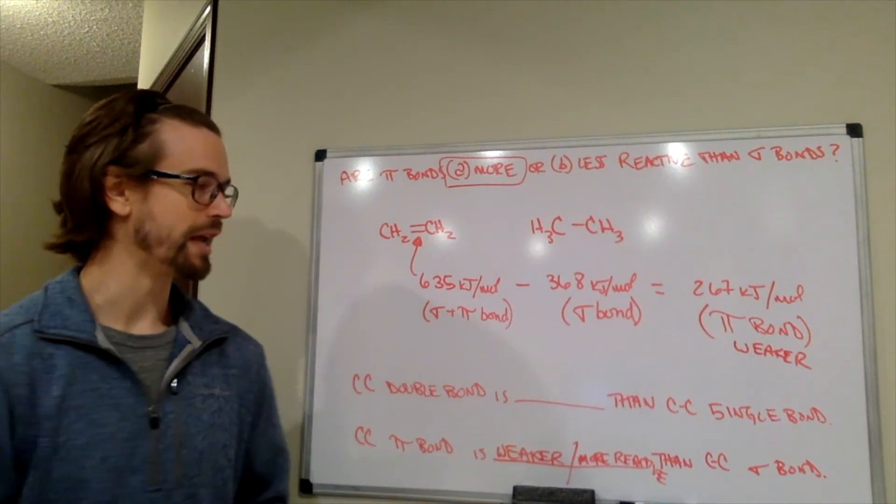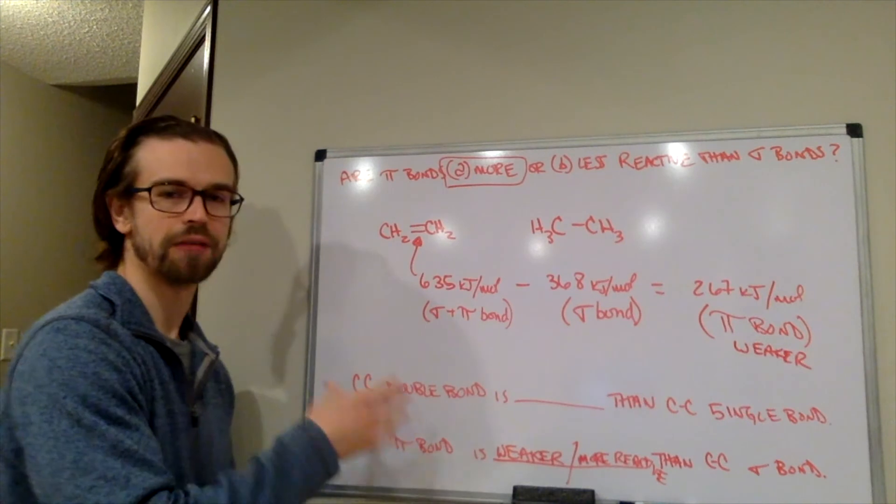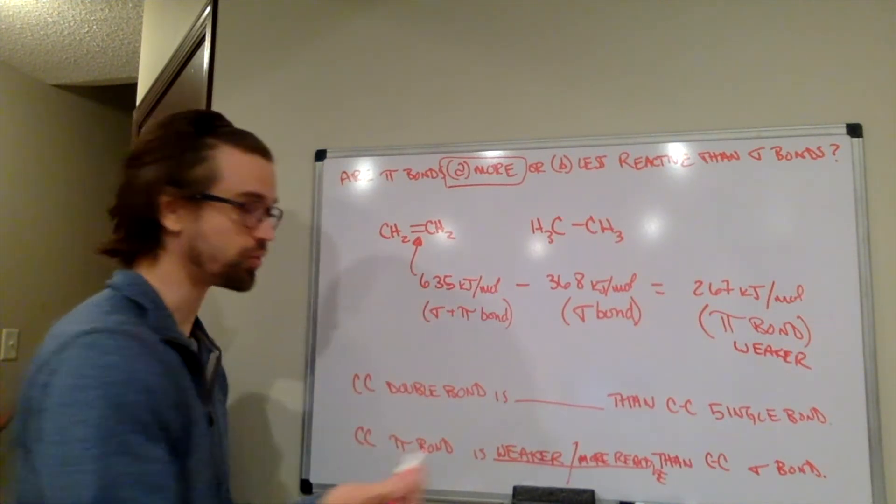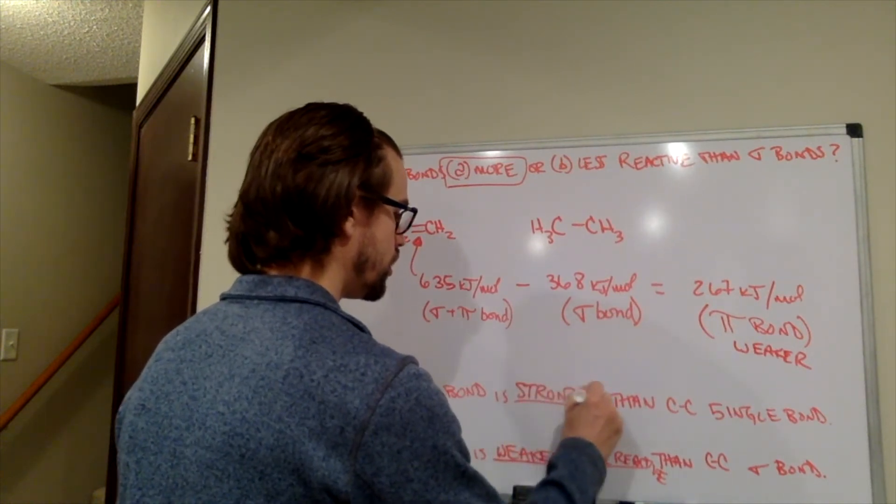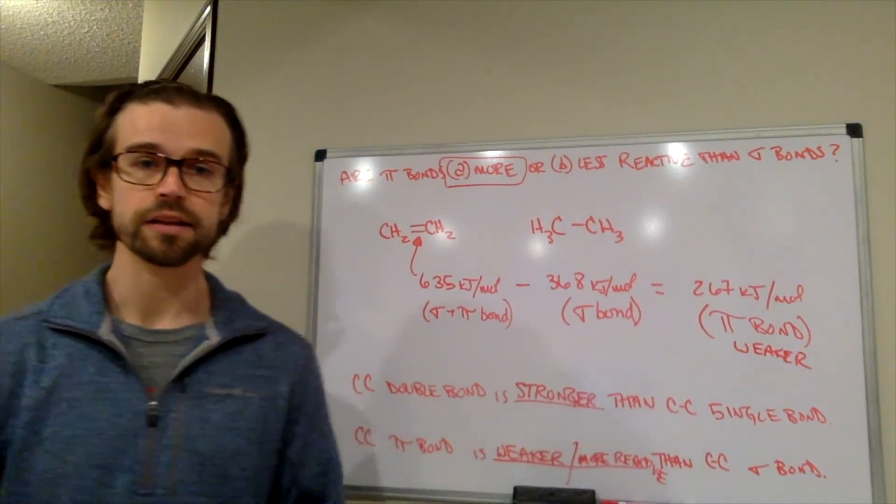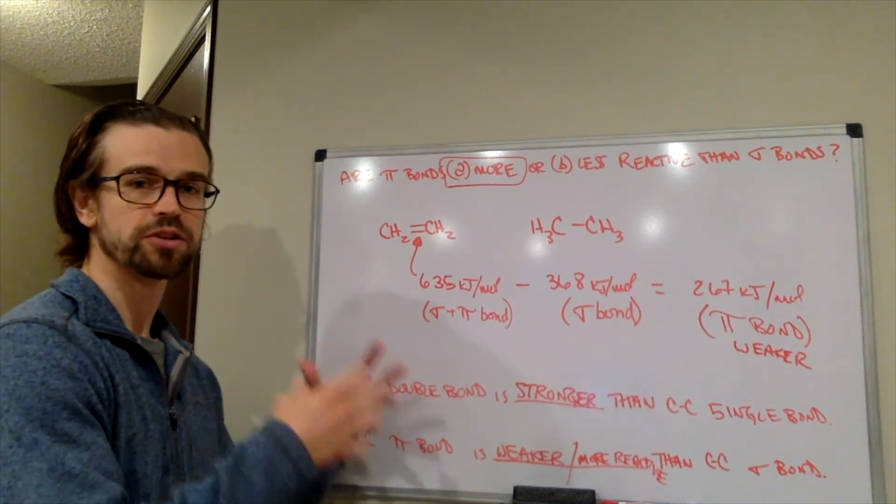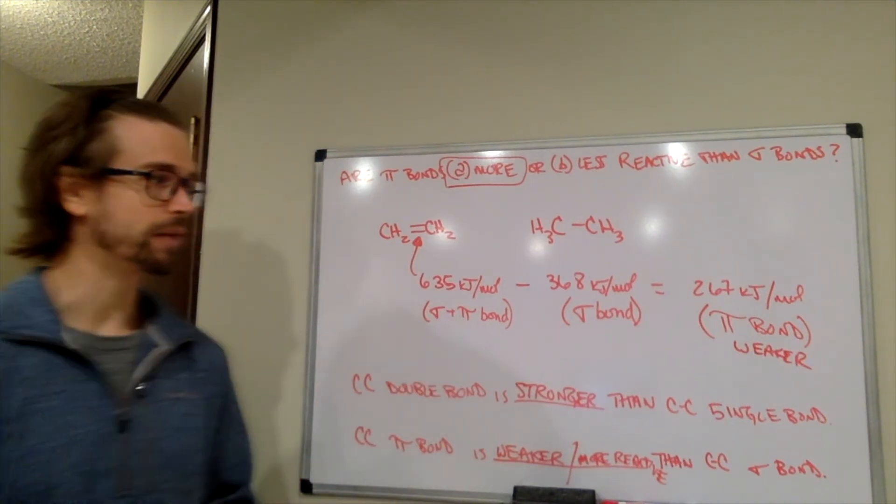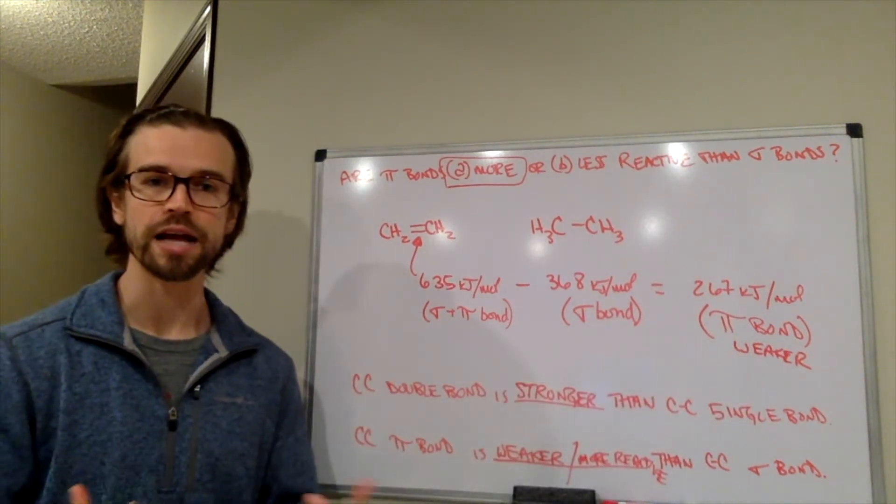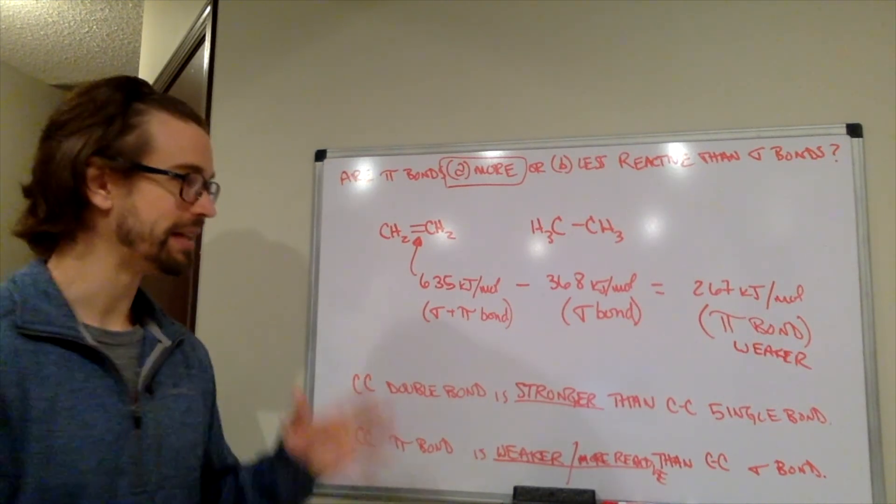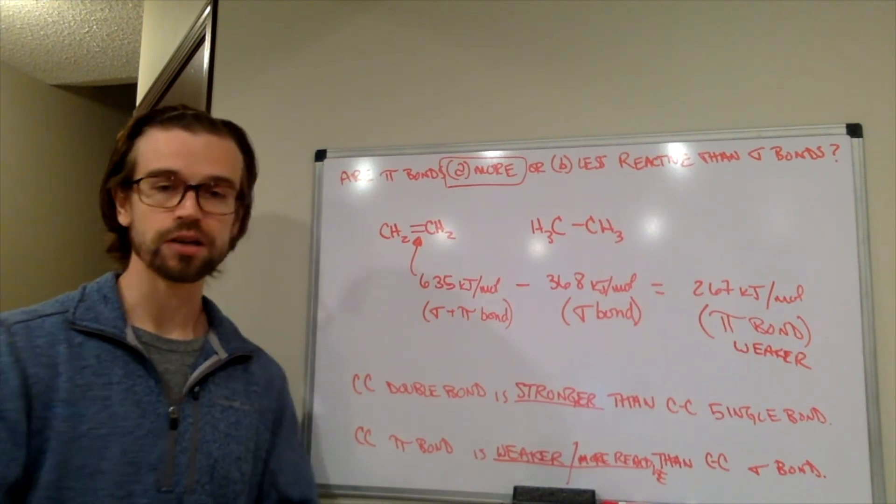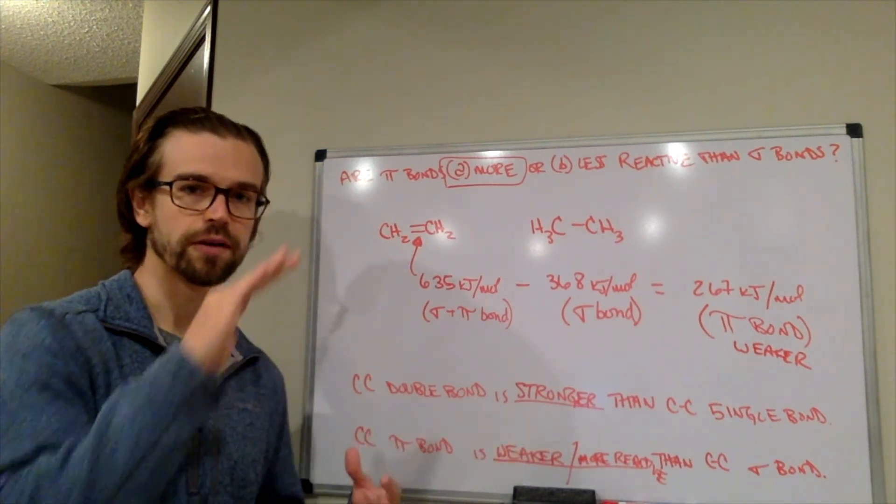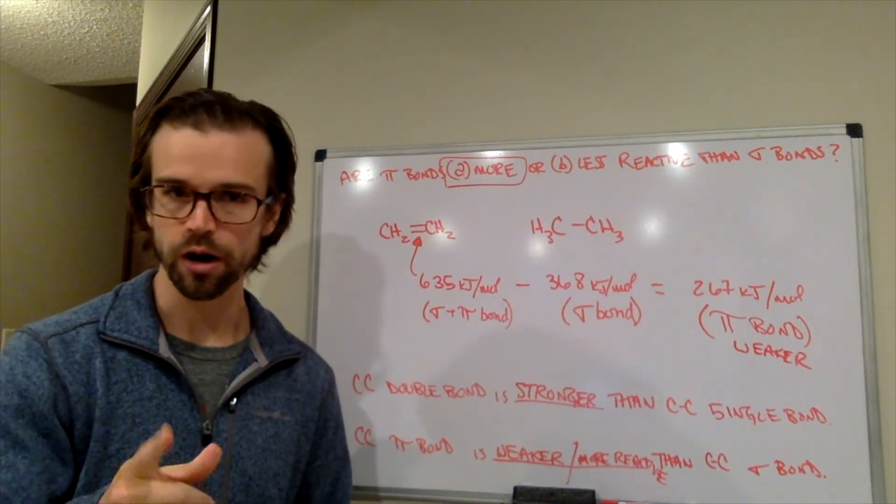What about this one? A CC double bond is blank than a CC single bond. Well, here we're not talking about pi versus sigma. We're just talking about the energy of the whole thing. A CC double bond is stronger as a whole than a CC single bond. But in this chapter and in alkene chemistry in general, we're not usually going from a double bond to nothing. We're going from a double bond to a single bond. And that's possible because this pi bond is weaker, which means that it is more reactive. It wants to react and make something more stable. That's how reactions of alkenes generally work. We're going to get rid of the alkene because we're forming stronger bonds. And that is the driving force. That's what allows reactions of alkenes to be a downhill thing.